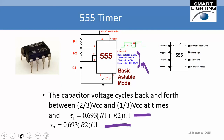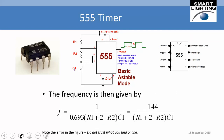The correct frequency formula is f equals 1.44 divided by (R1 plus 2 times R2) times C. This tells you the pulse frequency you can generate. If you want it to pulse once a second, once a day, or at any other rate, simply choose values for R1, R2, and C1 to achieve that.